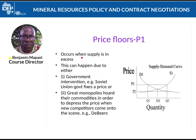Because tomatoes have a lifespan, if you go to the open market when there are a lot of tomatoes, people want to sell quickly so they don't go bad. Price floors can happen as a result of government intervention, or as a result of great monopolies. A good example is diamonds — when De Beers was in charge of the diamond market, they would determine what the price of diamonds should be.